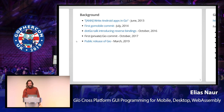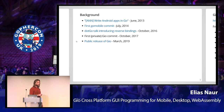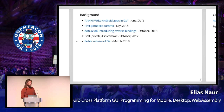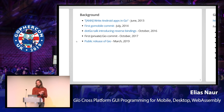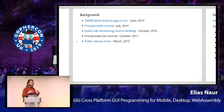So I decided in early 2017 to go away from the Go Mobile style of writing apps and try to write everything in Go — the drawing, the input handling, the window managing, everything. And that's what the Geo library tries to accomplish.